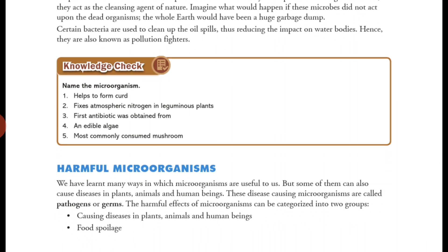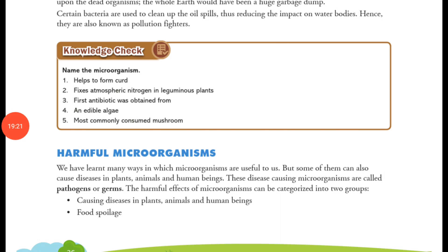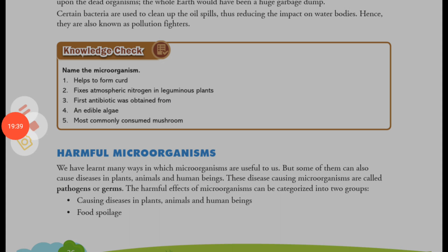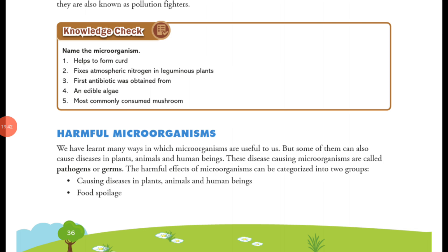Now let's check your knowledge. Name the microorganism which helped to form curd — Lactobacillus. Name the microorganism which fixes atmospheric nitrogen in leguminous plants — Rhizobium. The first antibiotic was obtained from a fungus called Penicillium. An example of an edible algae includes red algae, green algae, and brown algae — all three were given as examples. The most commonly consumed mushroom is the button mushroom, which accounts for 40% of mushroom consumption.